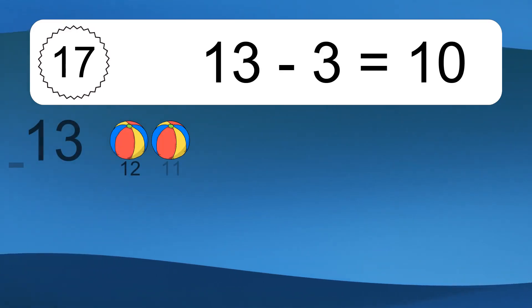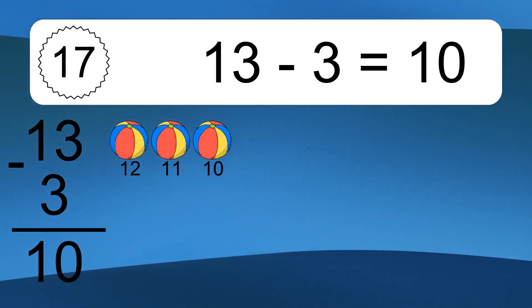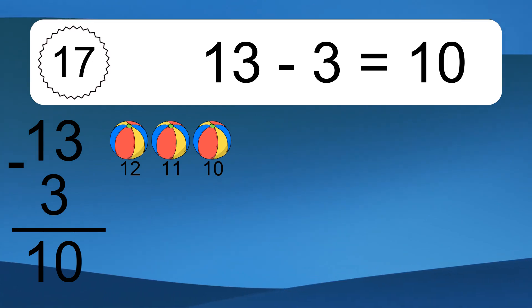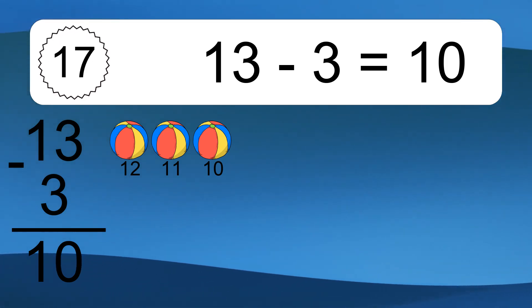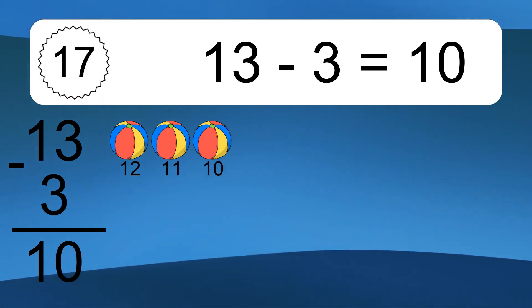Thirteen minus three equals ten. Let's count it: twelve, eleven, ten.